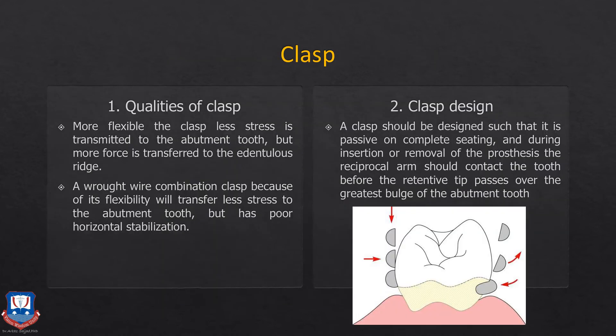Regarding the clasp: a more flexible clasp transmits less stress to the abutment teeth but more stress to the tissue surfaces, whereas a more rigid clasp transmits greater stress to the terminal abutment teeth, potentially causing bone loss or torquing. Depending on the clinical scenario, one must decide between a combination clasp, a cast clasp, or a flexible wrought wire clasp. The clasp tip should engage only the infrabulge undercut area, and the reciprocal arm should embrace the opposing tooth surface to prevent undesirable forces on the abutment teeth.